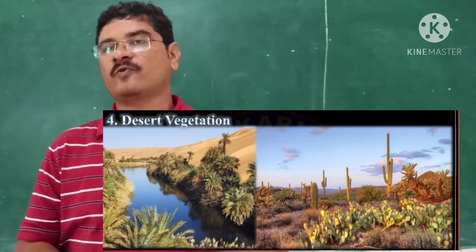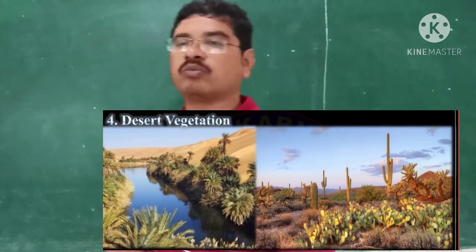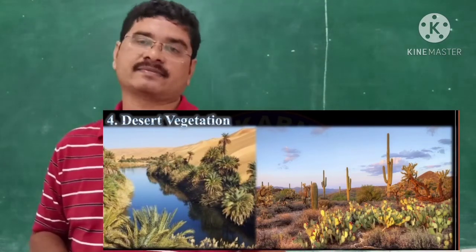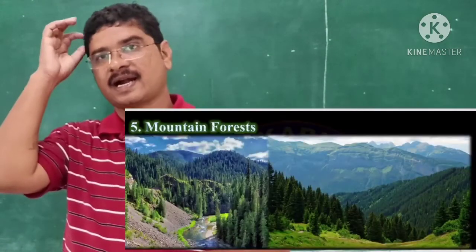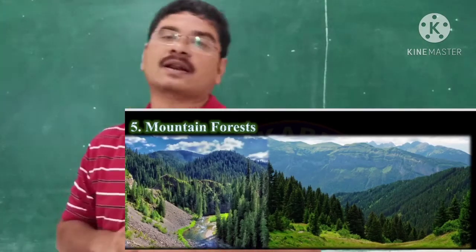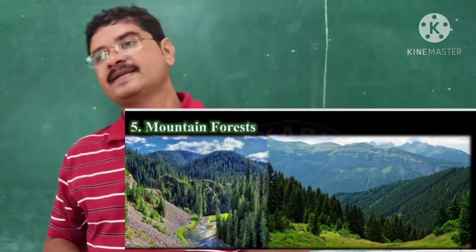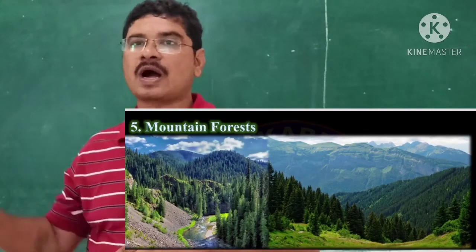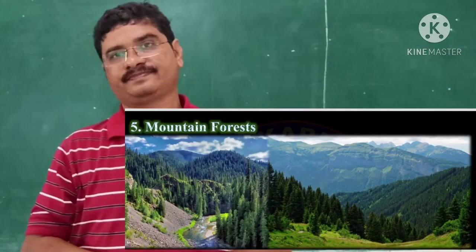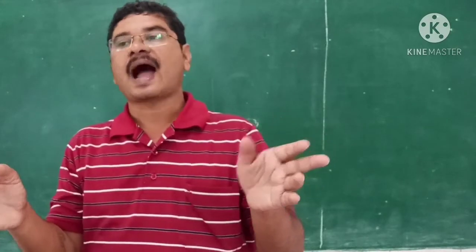The trees found in desert vegetation are Khejri, Kair, Palko, Babul, cacti, and Khejra trees. The trees and plants which grow on the slopes of mountains are called mountain forest. The plants and trees vary with increasing altitude.